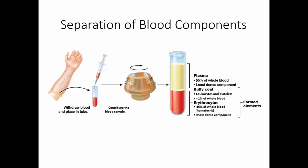Blood components can be separated by centrifugation. When we do that, we will get plasma, a buffy coat, and red cells. About 55% of whole blood is plasma. The buffy coat makes up less than 1% and is made of white blood cells and platelets. The erythrocytes compose about 45% of whole blood. This test where we spin the blood down and separate the red cells from the plasma is called a hematocrit.